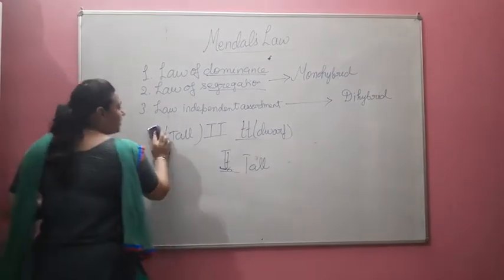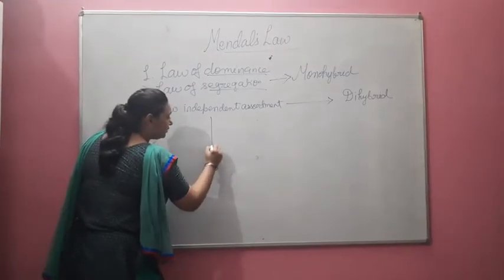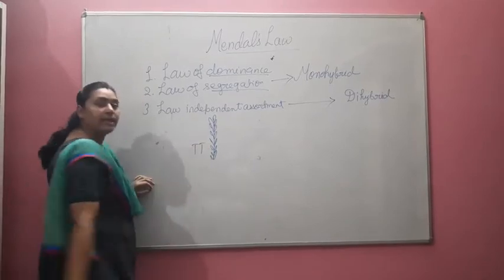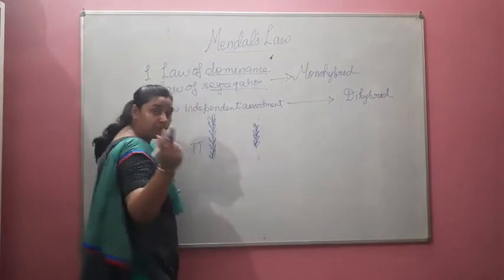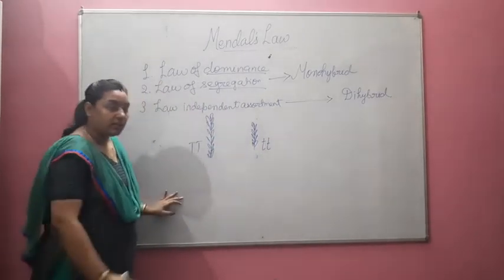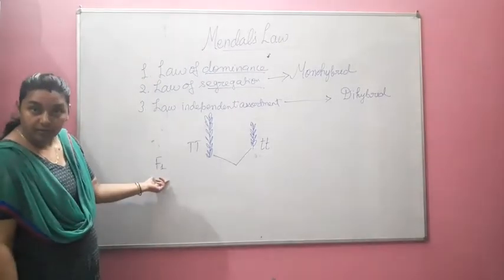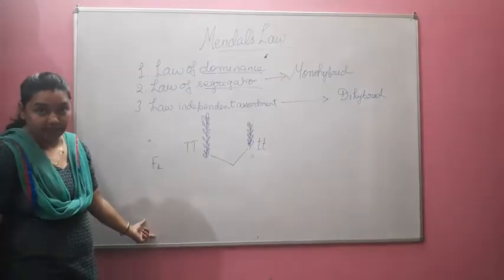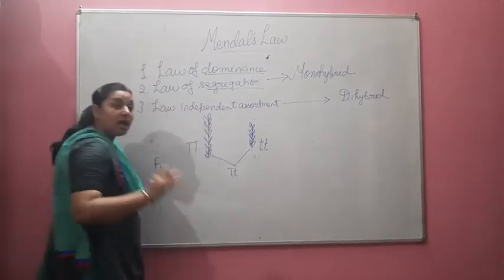Mendel did his experiment on pure breeds of tall plant, represented by capital T and capital T (TT), and he took one dwarf plant which was also pure line, represented by small t and small t (tt). When he did a cross between them, then in the F1 generation — filial 1 — as generations move down they are called F1, F2, F3, and so on. In this first filial 1 generation, he found that all the plants are tall.